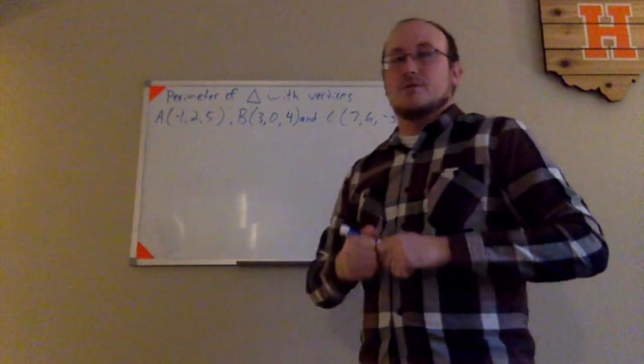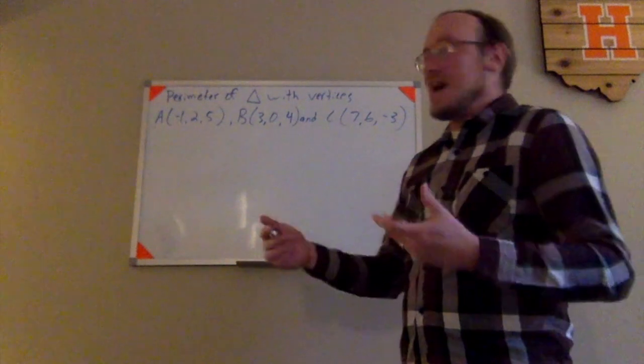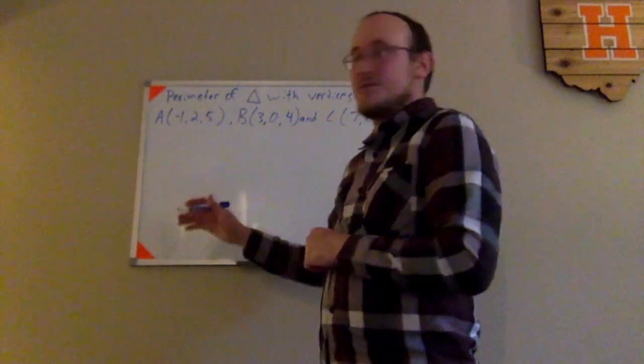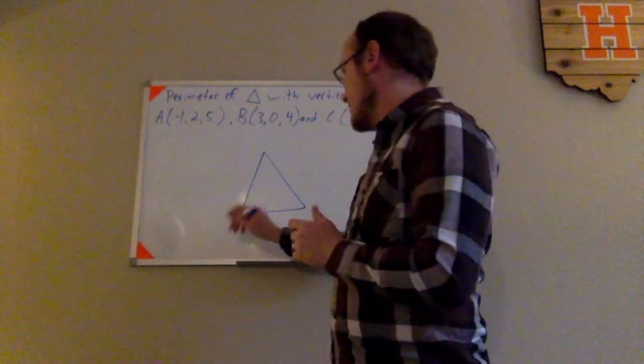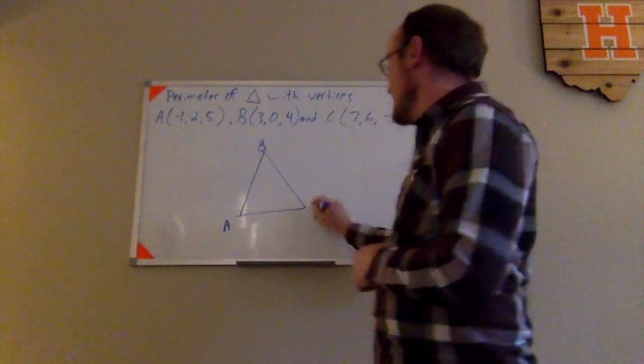Maybe you watched me do a similar problem in two-dimensional space. But I have to know that if I'm trying to find the perimeter of this triangle, I'm just going to draw a generic triangle here with vertices A, B, and C.